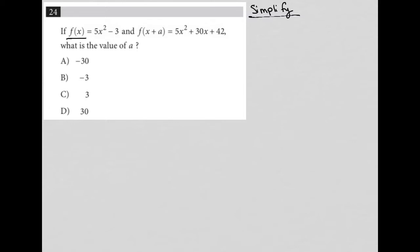So what do we know? We know that f(x) is equal to 5x² - 3, and that f(x+a) is equal to 5x² + 30x + 42.